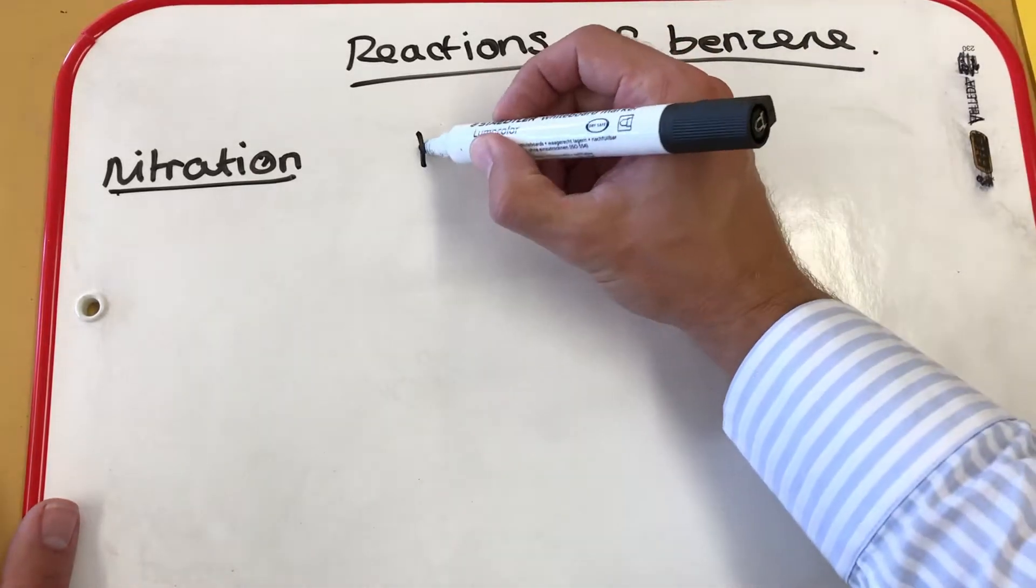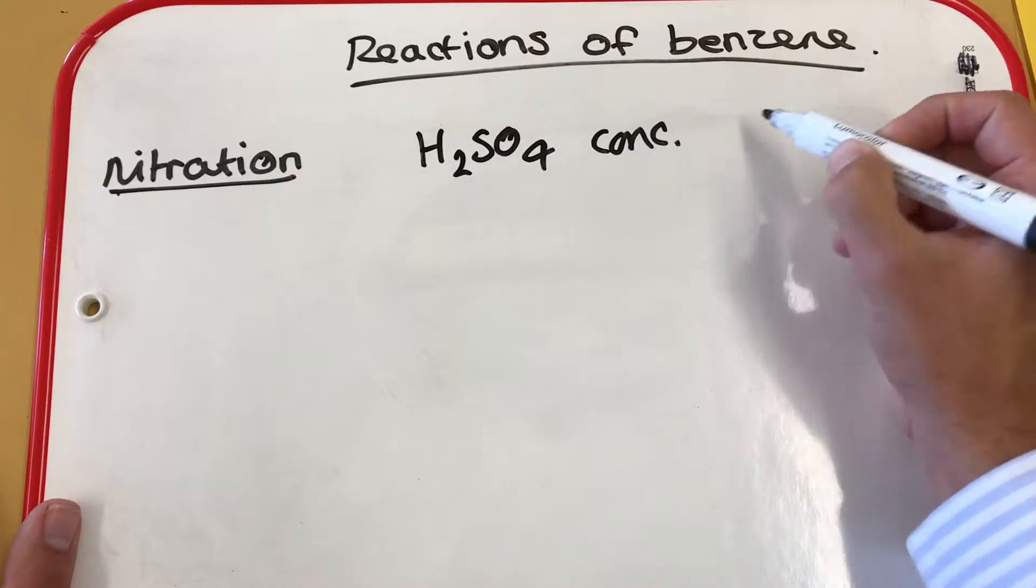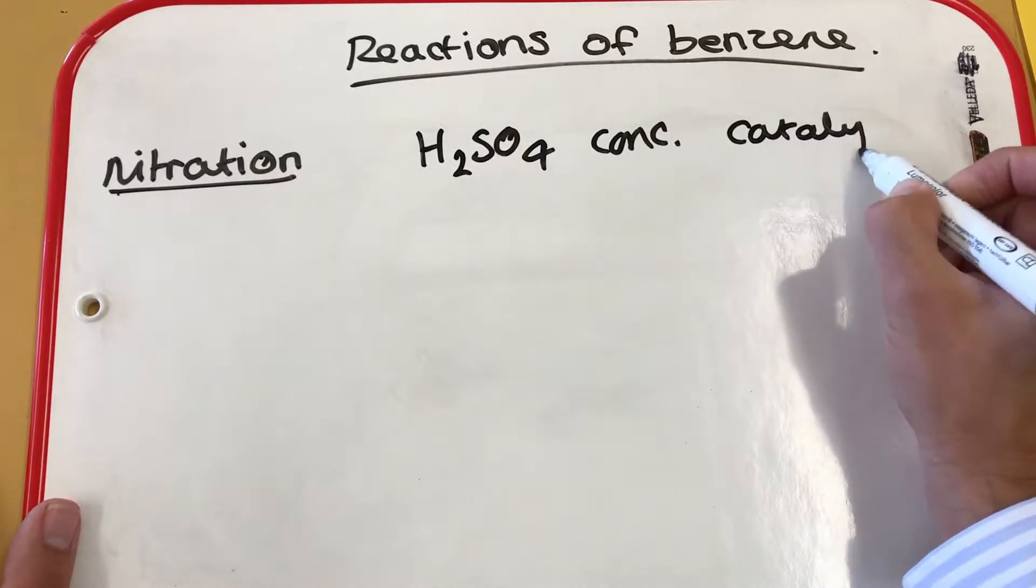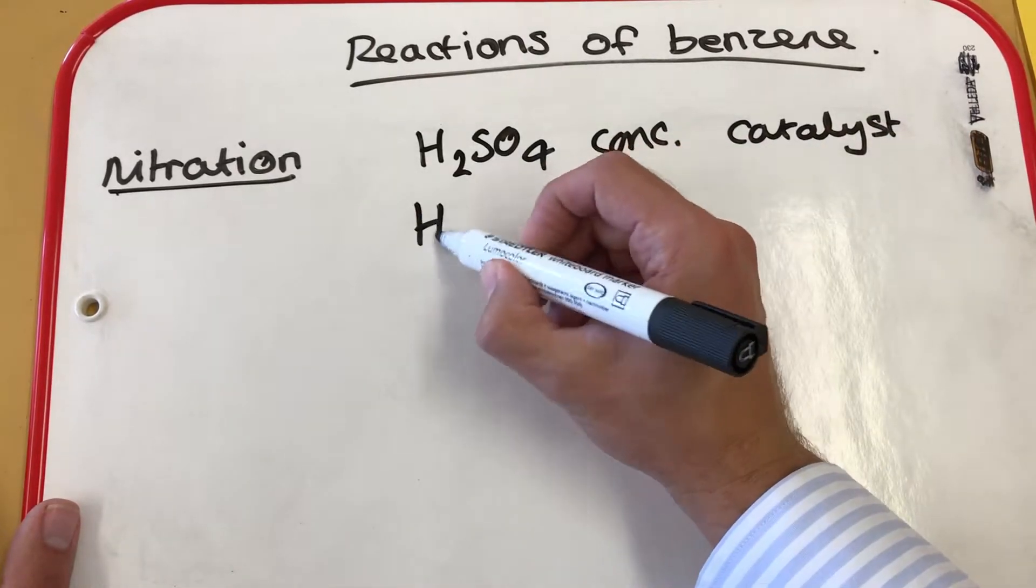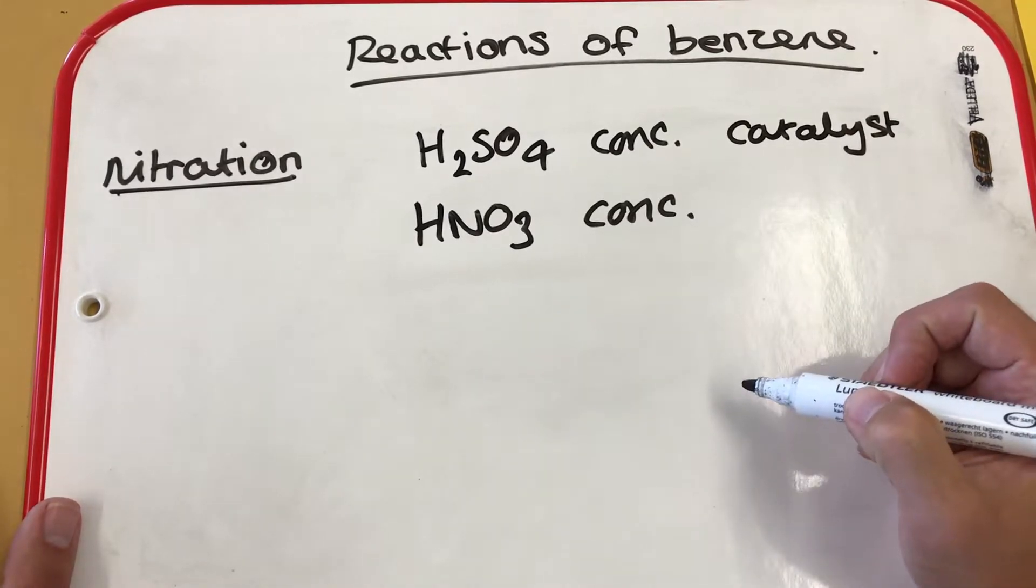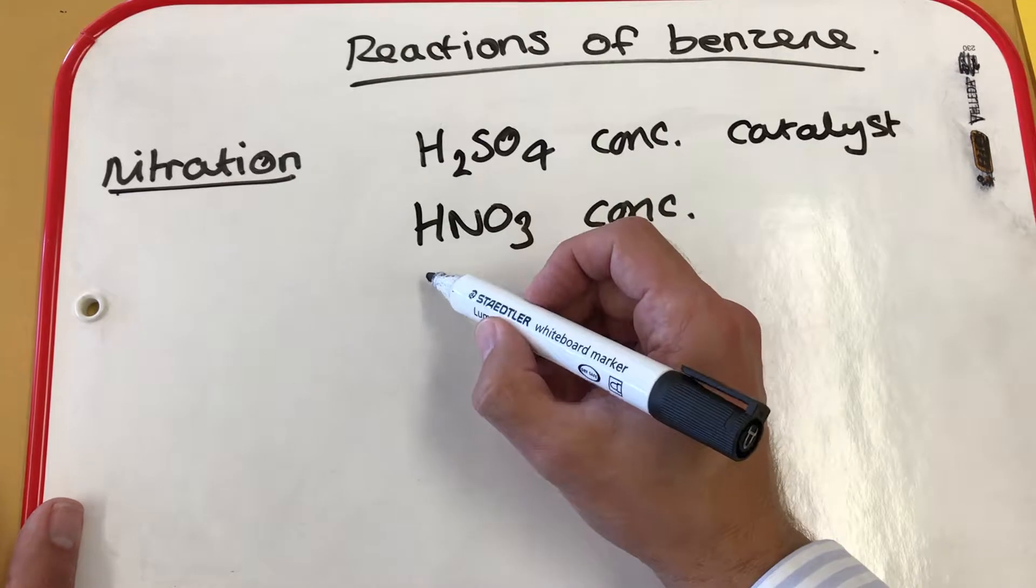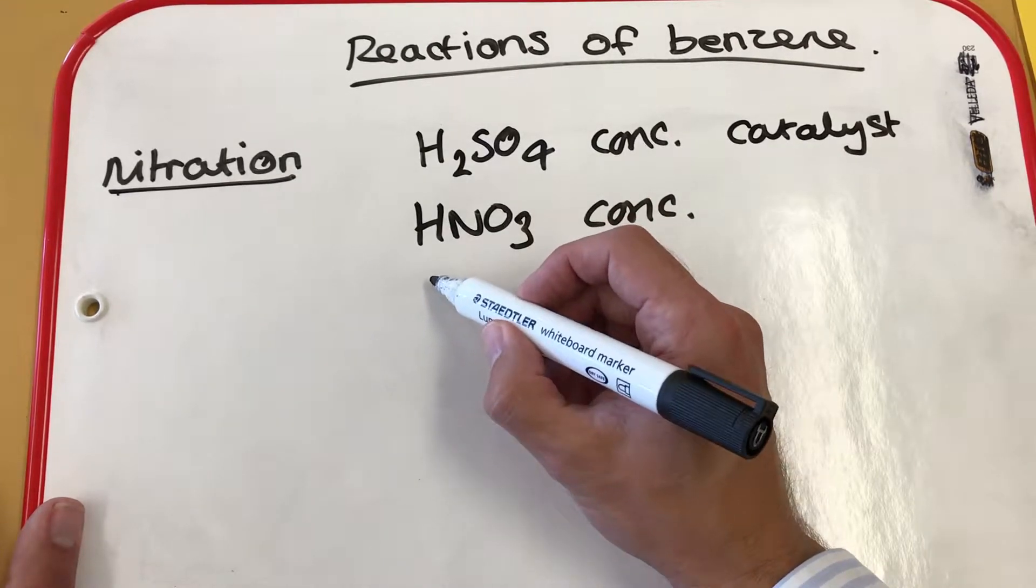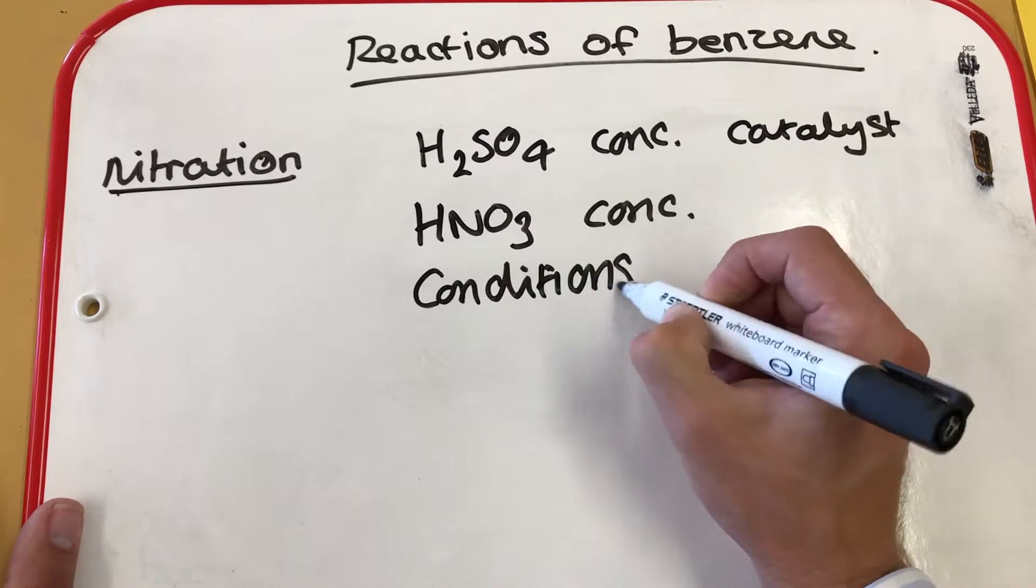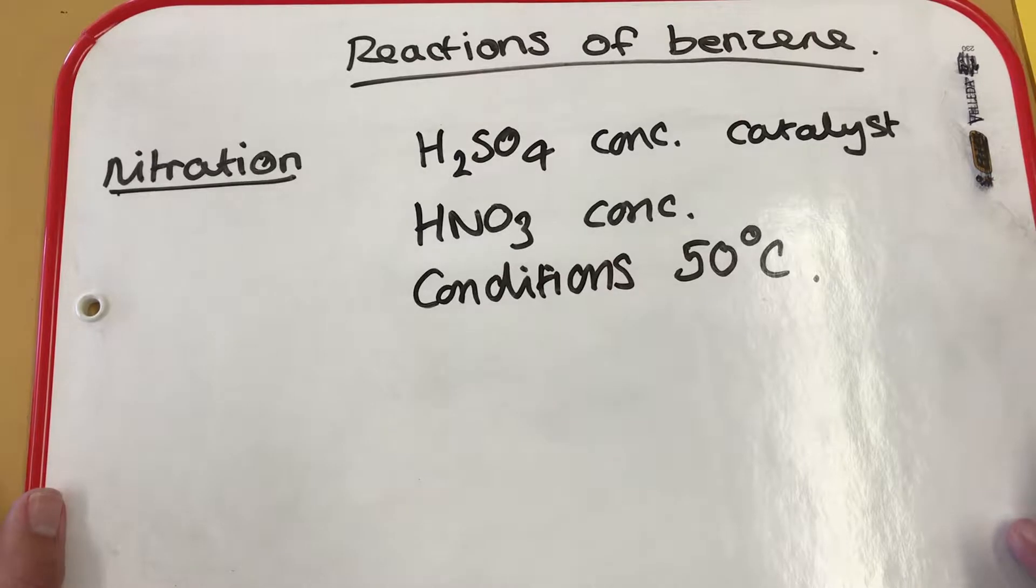So first of all you need concentrated sulfuric acid and that's going to be the catalyst for the reaction. You will need concentrated nitric acid, this will be used to produce the electrophile for the electrophilic substitution reaction and the reaction conditions are 50 degrees Celsius and this is to ensure that you keep control of the particular reaction.